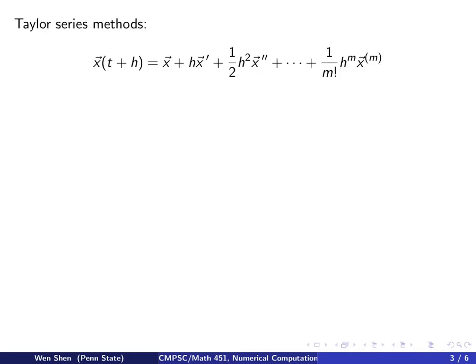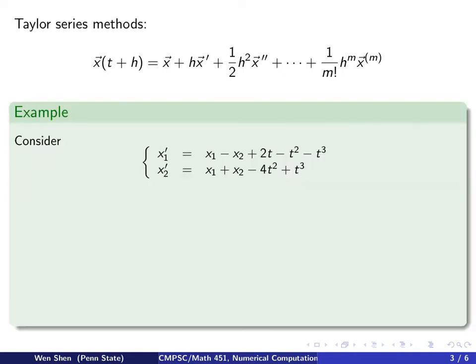Our first example is on Taylor series method. Here we write out the Taylor series method. It takes the same form as for the scalar equation, except now we put little vector arrows on the X, because X becomes an unknown vector. And that's it. That's the Taylor series method for systems.